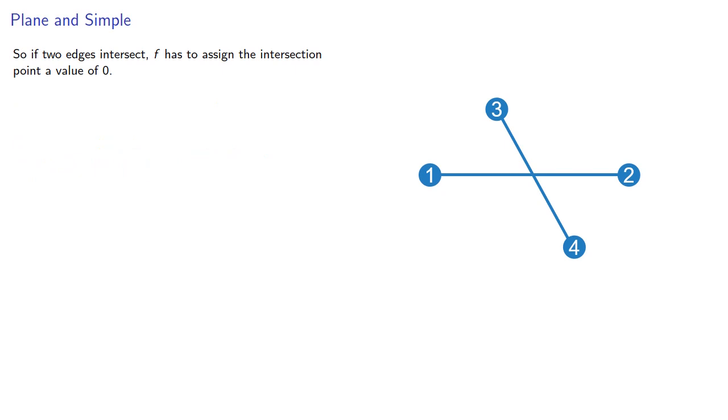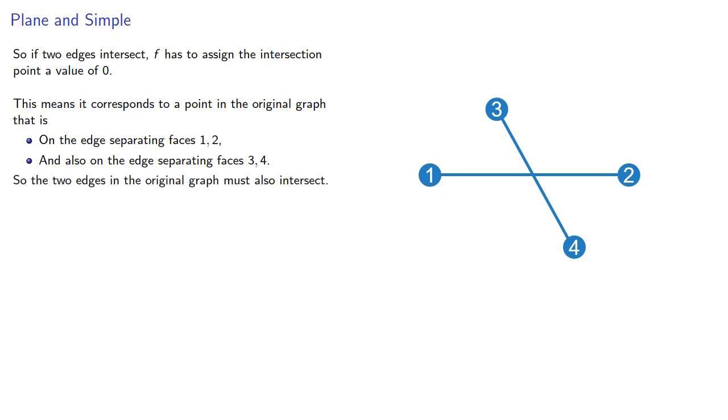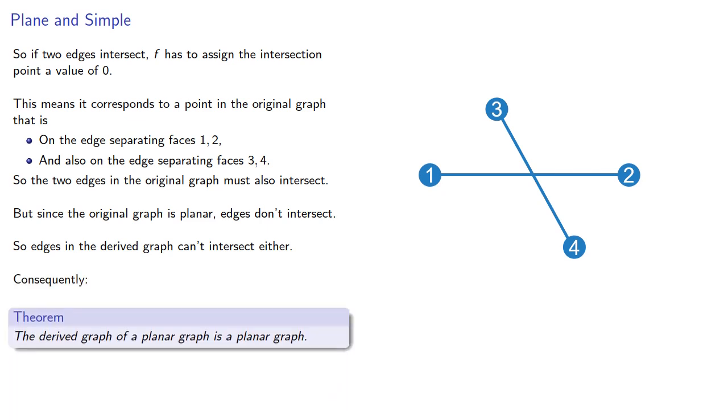So if two edges intersect, our function has to assign the intersection point a value of 0. This means it corresponds to a point in the original graph that is on the edge separating faces 1 and 2, and also on the edge separating faces 3 and 4. So the two edges in the original graph must also intersect. But since the graph is planar, edges don't intersect, so edges in the derived graph can't intersect either. Consequently, the derived graph of a planar graph is also a planar graph.